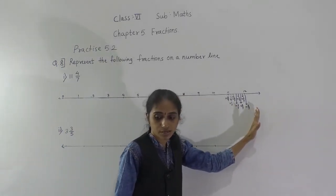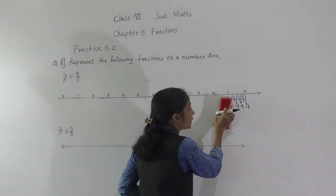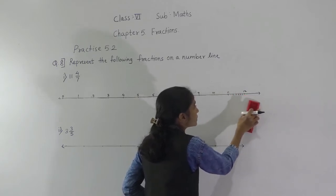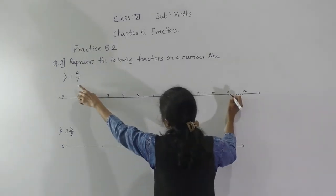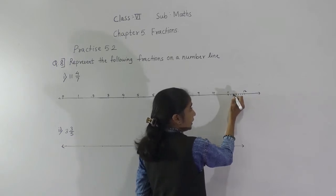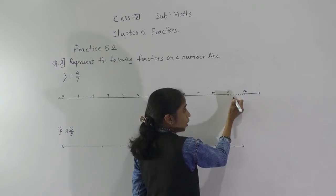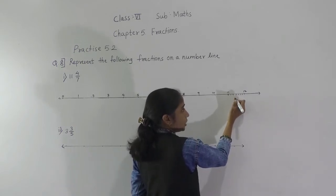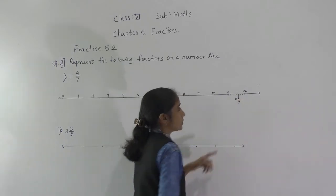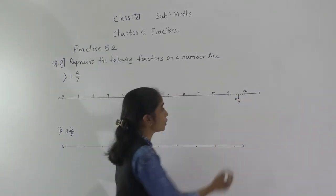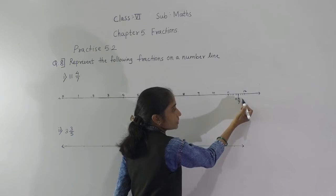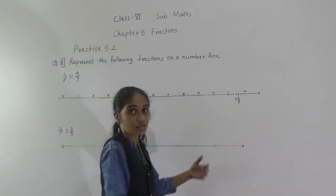So what we have to show is 11 and 4 upon 7. After 11, the first line is 11 and 1/7, the second is 11 and 2/7, the third is 11 and 3/7, and the fourth line is 11 and 4/7, which is where we represent the fraction.